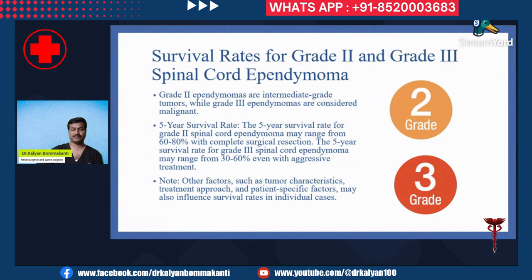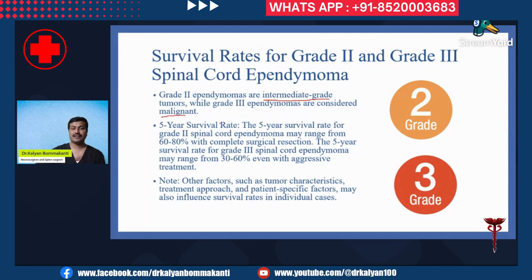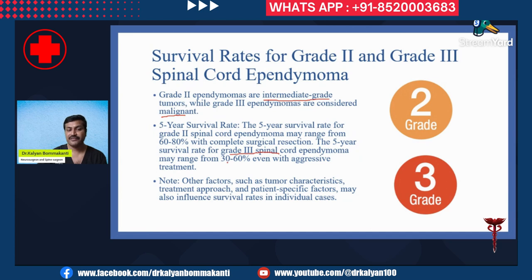Grade 2 ependymomas are intermediate grade tumors, while grade 3 ependymomas are considered malignant — they are cancerous and have the worst outcome. The 5-year survival rate for grade 2 spinal cord ependymomas may range from 60 to 80 percent with aggressive treatment. Other factors also play a role.